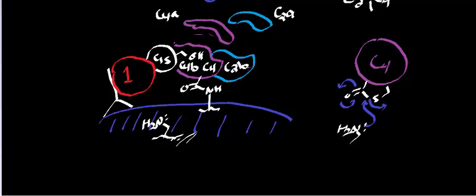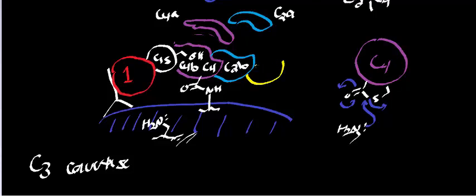C4B and C2B together have catalytic activity. Specifically, their catalytic activity is termed C3 convertase. The reason it's called C3 convertase is that it's able to split C3 into two components, much like C1S was able to do. It effectively converts C3 into C3A and C3B — one half floats away (C3A), and what's left behind is C3B.